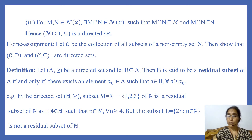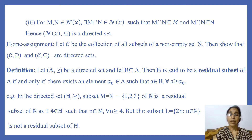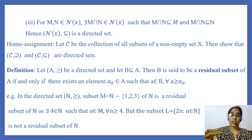We have a home assignment: Let C be the collection of all subsets of a non-empty set X. Show that C is a directed set with the inclusion relation, and C is also a directed set with the reverse inclusion relation.